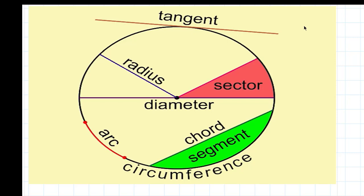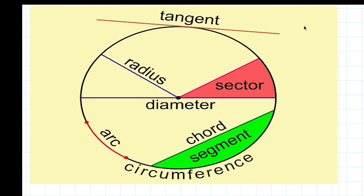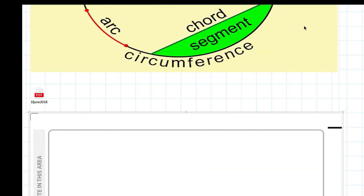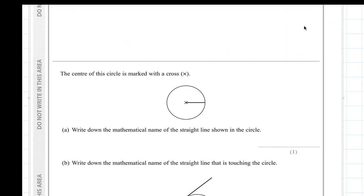Now let's look at the exam question. Here we have the center of the circle marked with a cross, and we want to write down the mathematical names. As we can see, this is the radius.